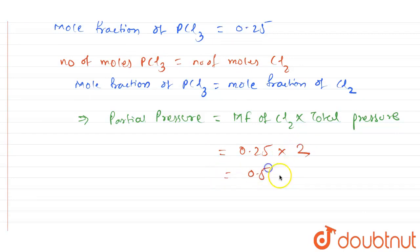So the final answer we are going to get is 0.5 atm. So this will be the partial pressure for CL2.